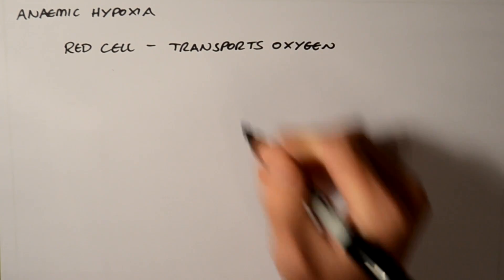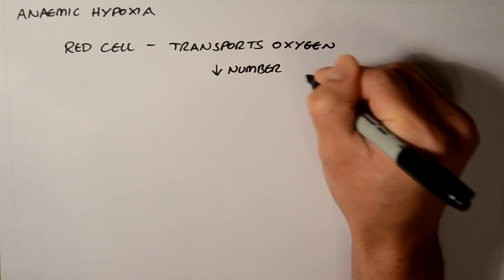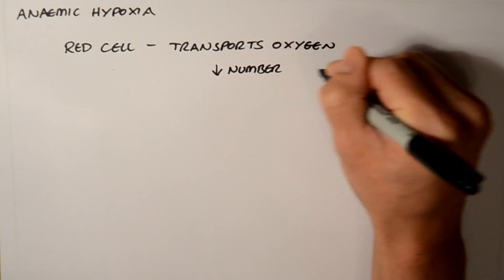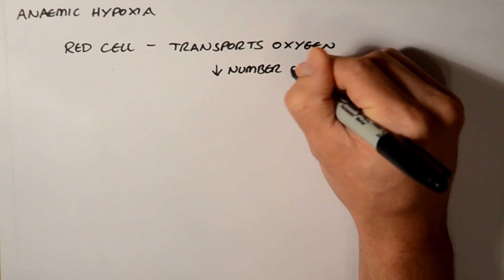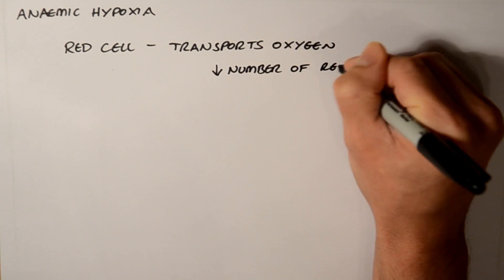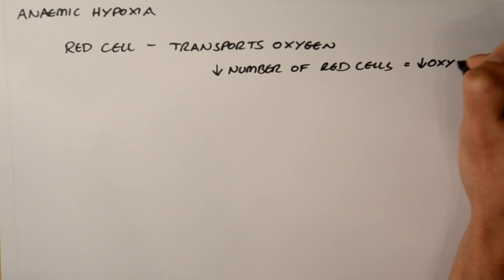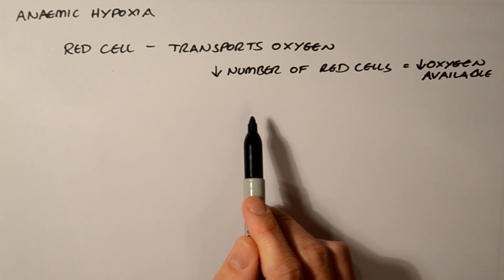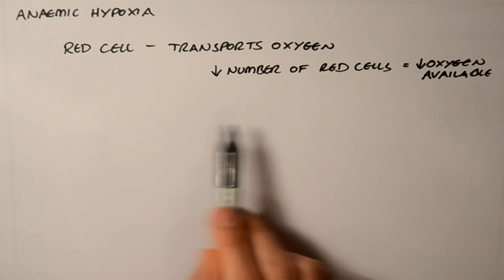If you have a decrease in the number of these red cells, you then get less oxygen available for the tissues. That's why anemia is very important. When the cells are decreased, the tissues have reduced oxygen supply.